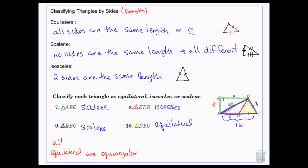Because equilateral and equiangular end up being the same thing — all equilateral triangles are equiangular and vice versa — we very rarely even use the word equiangular. We just usually use the word equilateral, because if you're one, you're the other. So if you were to write equilateral when it asked for equiangular, I would not count that wrong.